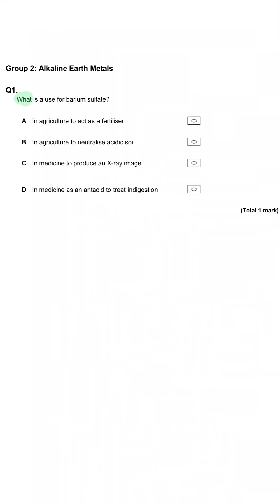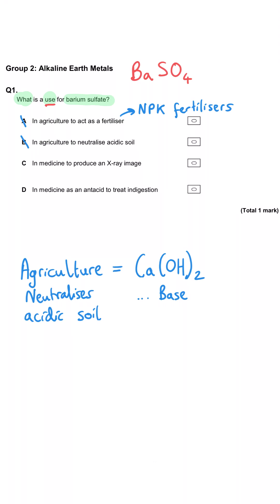What is a use for barium sulphate? Is it A, in agriculture to act as a fertiliser? No, Group 2 metals are used in agriculture but not as fertilisers. We see what they're used for in B: to neutralise acidic soil. But it isn't barium sulphate that has this use — this is calcium hydroxide, more commonly known as slaked lime.